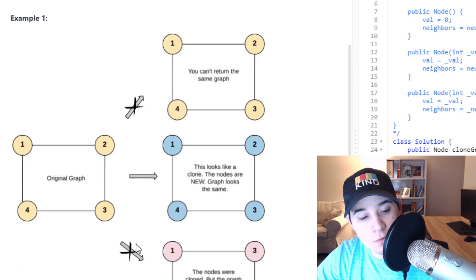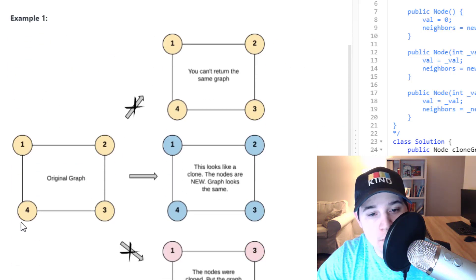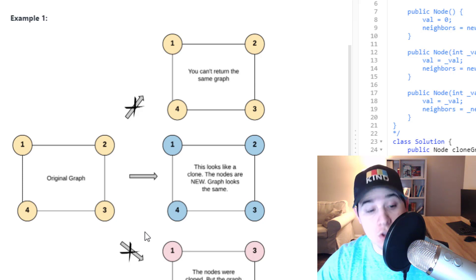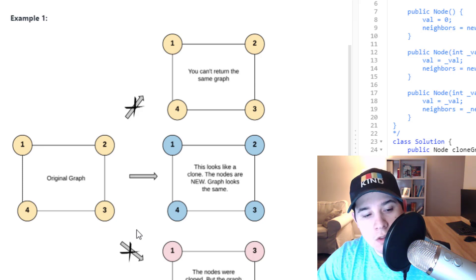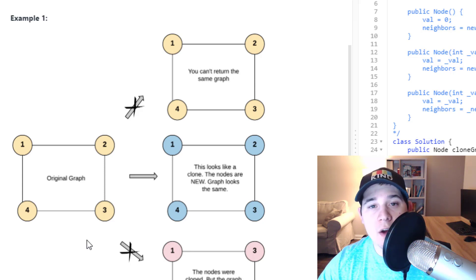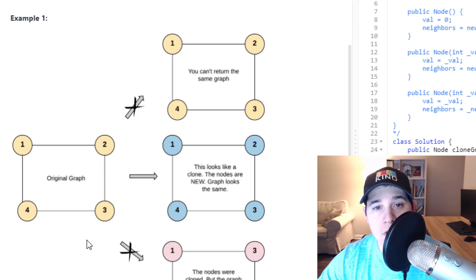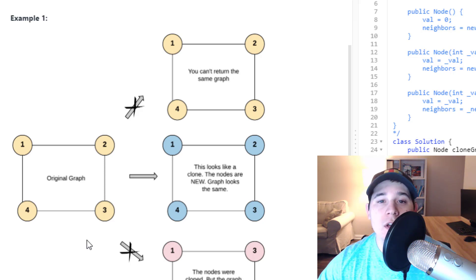So in this first example, we have a graph containing the nodes one, two, three, and four, and we need to clone this input. All of these nodes — one, two, three, and four — we need to allocate completely new memory and make the same connections in our clone graph that we have in our input. We're going to use DFS to solve this problem. You can also solve this using BFS, but I find the DFS way a bit more simple. So let's jump over to the whiteboard.